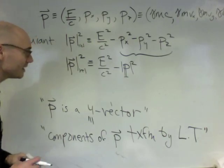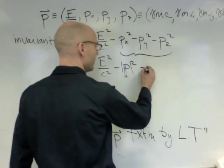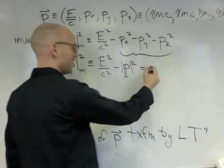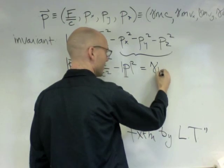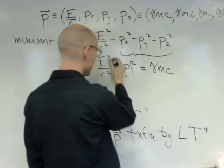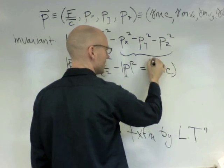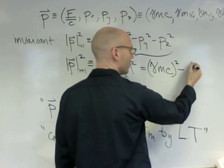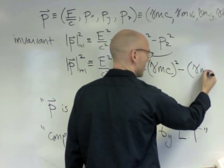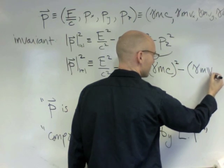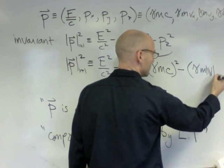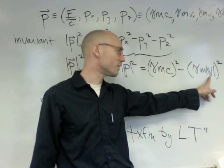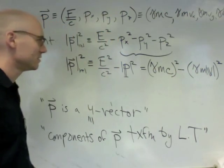But let's now plug in things we know for these energies. So this energy here is gamma MC. This E over C is gamma MC. So this is gamma MC squared here. And this P, of course, is gamma MV squared, where, again, I've taken the magnitude of the three vector velocity squared.